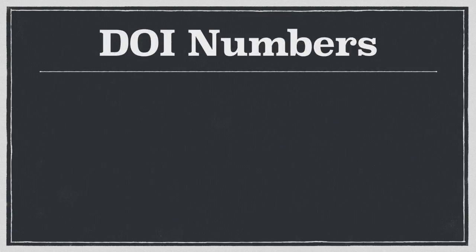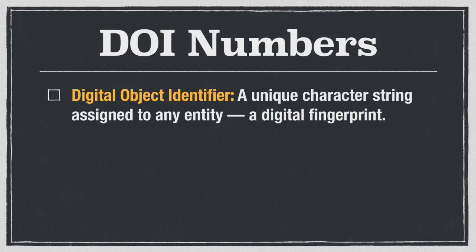Before I get to the tip, I just want to briefly go over what a DOI number is. DOI stands for Digital Object Identifier. It's a unique character string that is assigned to any object. You can think of it as a digital fingerprint, and that's why DOIs are so great. With so many databases and journals out there, it is so powerful to have a unique numerical or alphanumerical string that you can just put into a website and it will take you directly to the source.